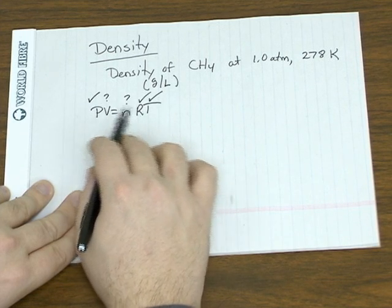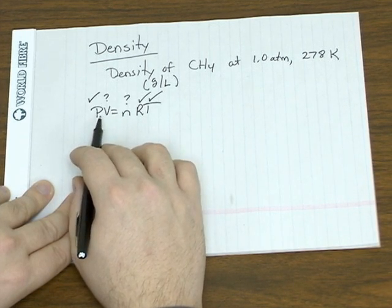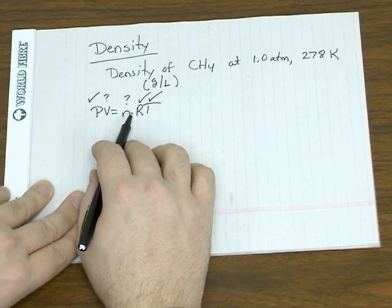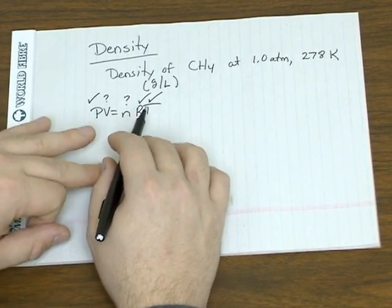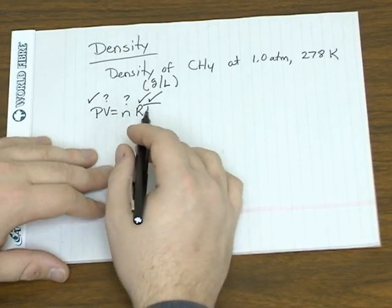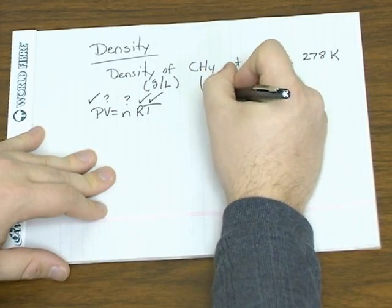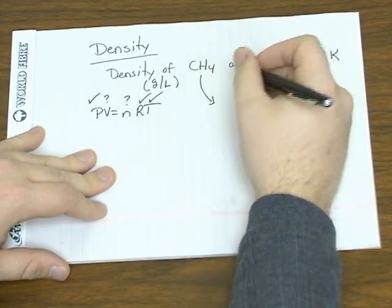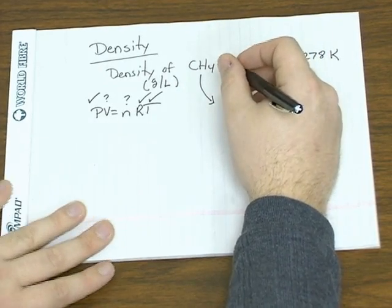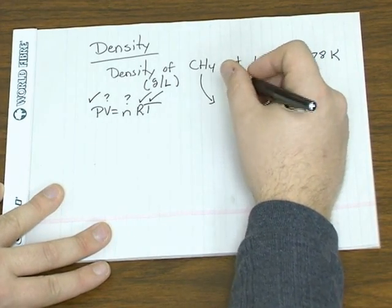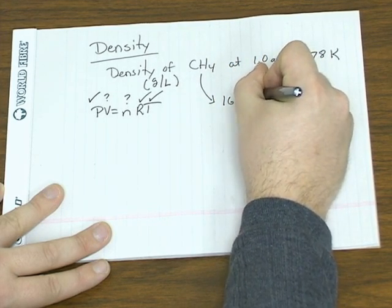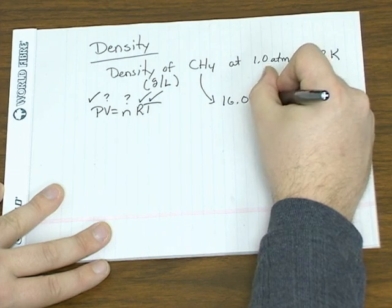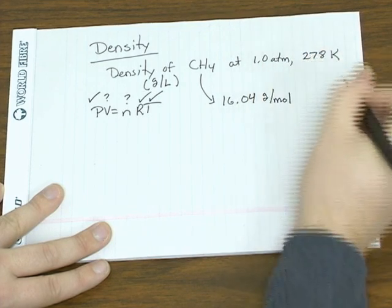So at first, you may think that we're not going to be able to use the ideal gas law, because typically we have three of our four variables and we solve for the fourth. But we are given the identity of the gas. And if you look at the periodic table, add up the atomic weights, you get a molar mass of 16 grams per mole.